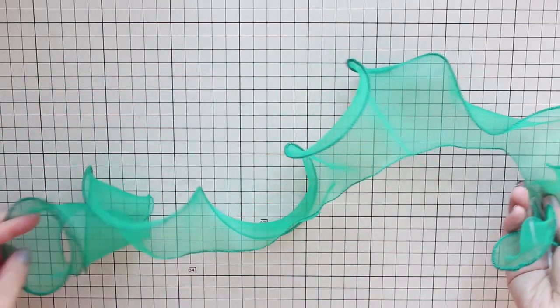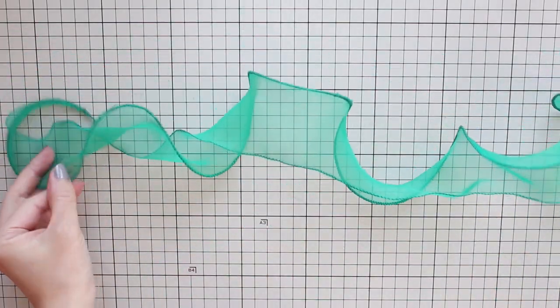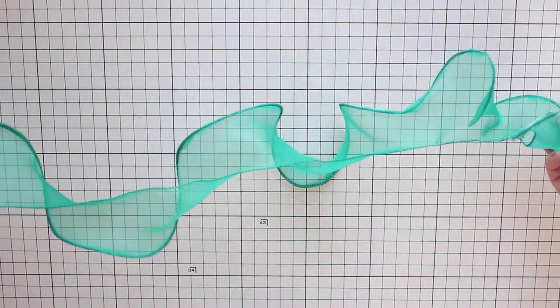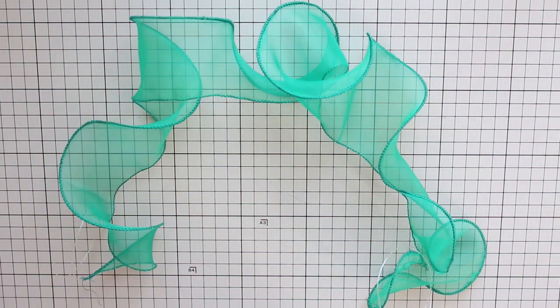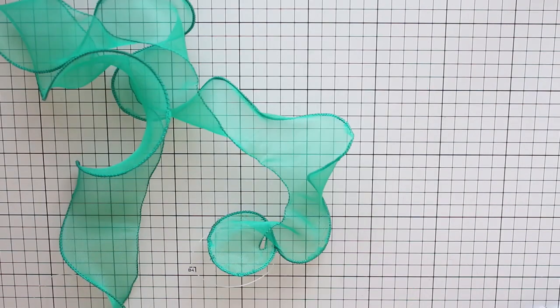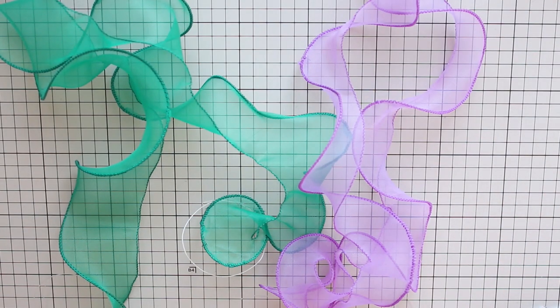And now as you can see the curls are more defined and three-dimensional. You can see a more detailed instruction on how to do this in my lettuce hem tutorial. You can find the link in the description below. Repeat for the other strip.